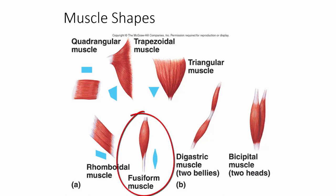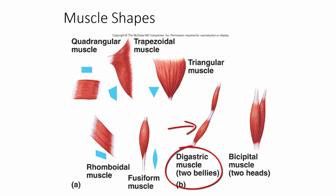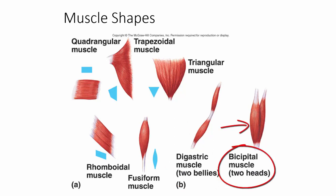Other muscles take a fusiform shape. A muscle with two bellies is called digastric — 'di' means two and 'gastric' refers to bellies. A muscle with two heads is called bicipital; these heads act as origins. This is important: on a test, 'heads' and 'origins' may be used interchangeably. Similarly, a tricipital muscle has three heads, and a quadriceps muscle has four heads.